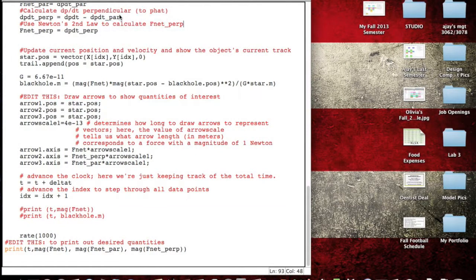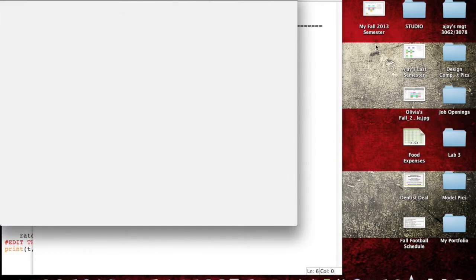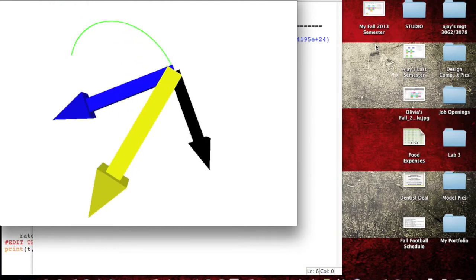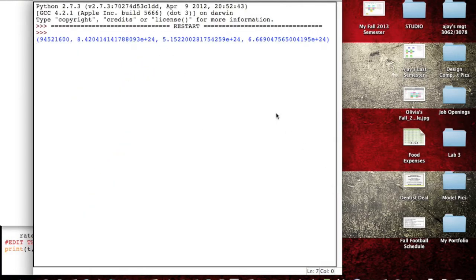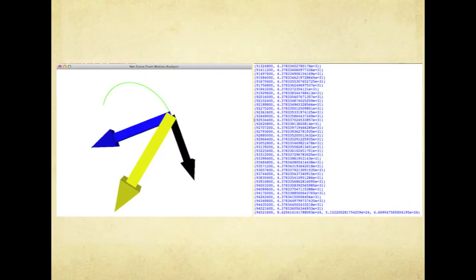Here is the simulation that is generated from my computational model. You will see the orbit of the star around an unseen black hole. The three arrows that you see represent particular forces. The blue arrow is the perpendicular component of the net force that points inwards into the kissing circle. The black arrow is the parallel component of the net force that points in the direction of the velocity and motion of the star.